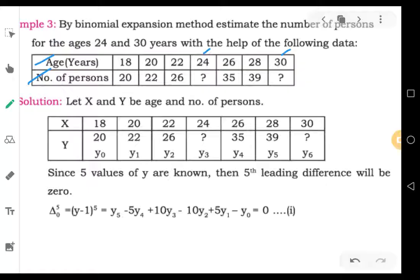So, the first step is, let us say age is x, number of persons is y. After writing the data, start assigning y0 from first year, y0, y1, y2, y3, y4, y5, y6.